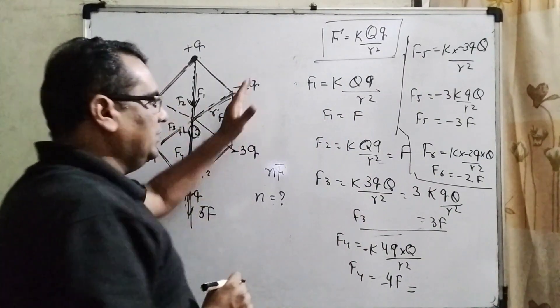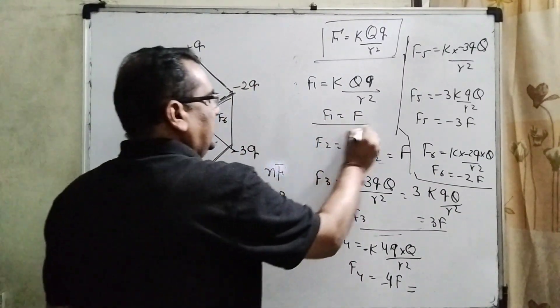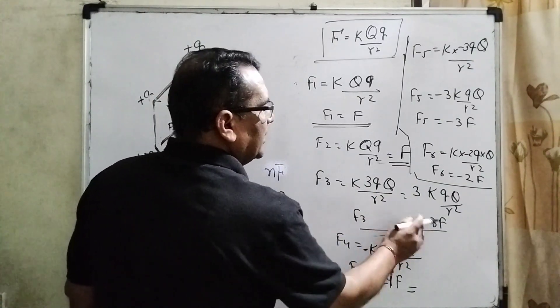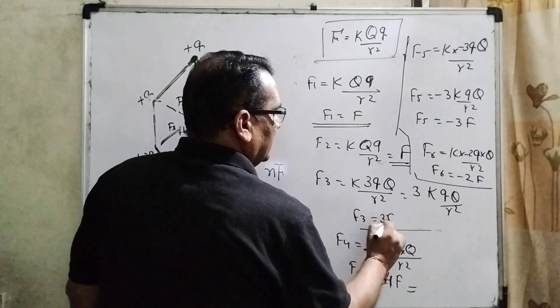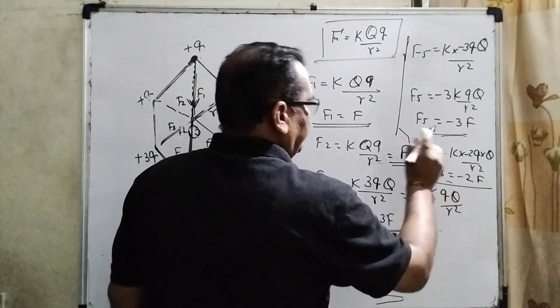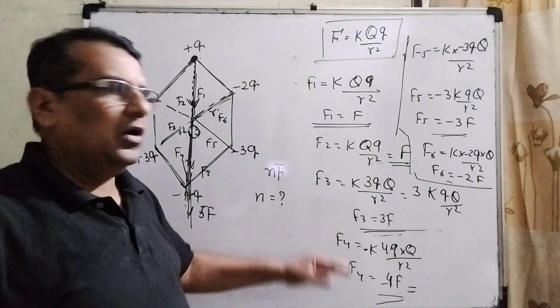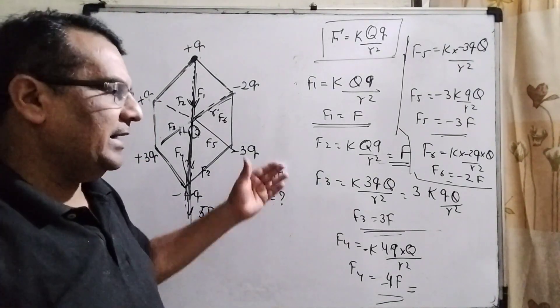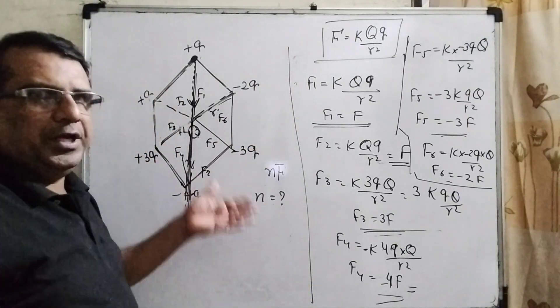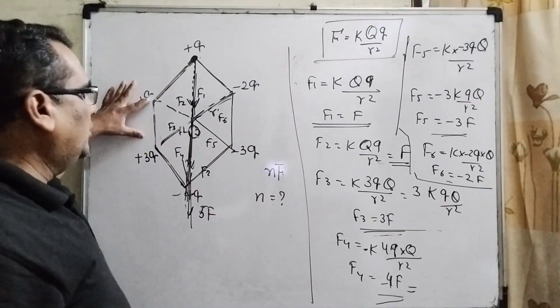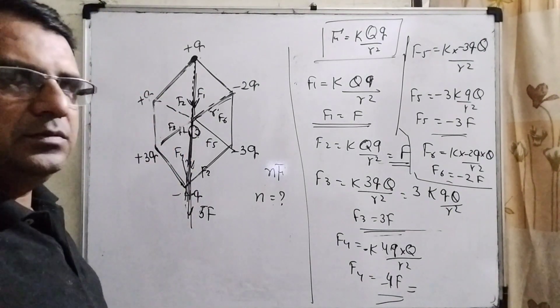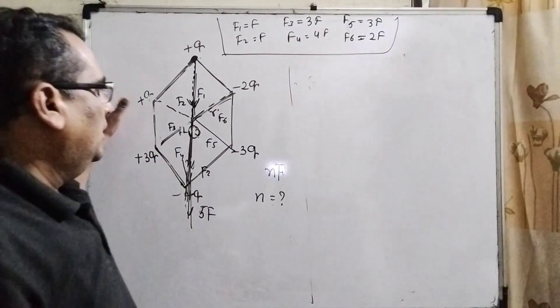So, we have found out all the charges. You can see that F1, F2, F3, here is F3, F4, F5 and F6. We have neglected this minus sign because minus sign only shows the attraction and repulsion force because direction is fixed always positive to negative.